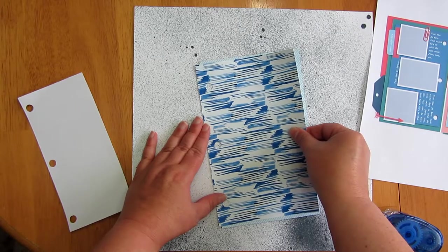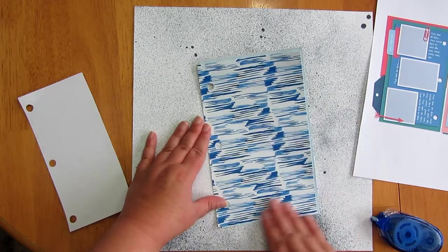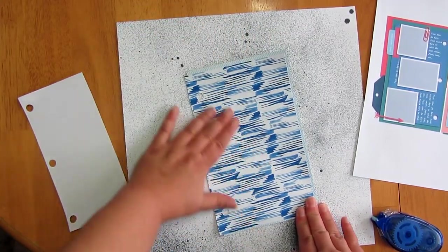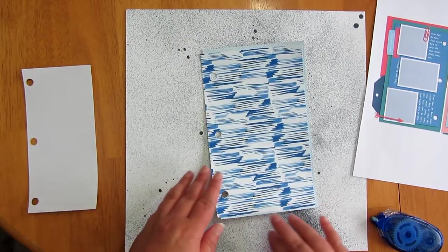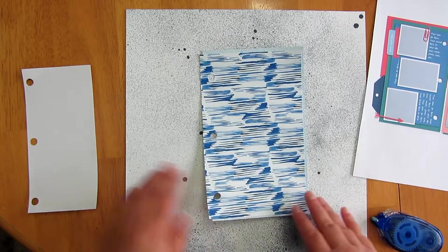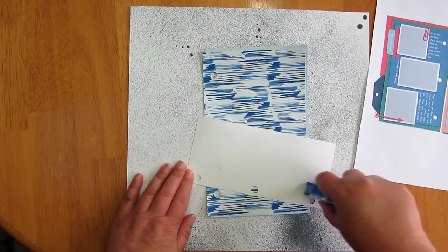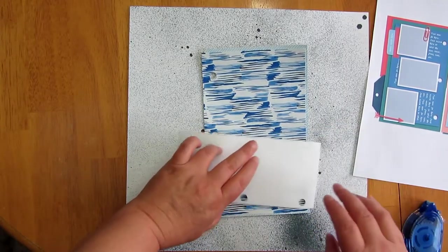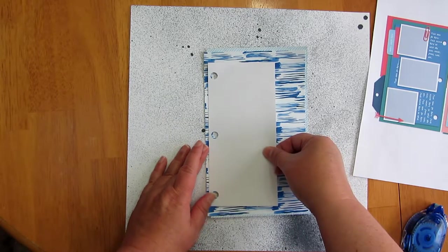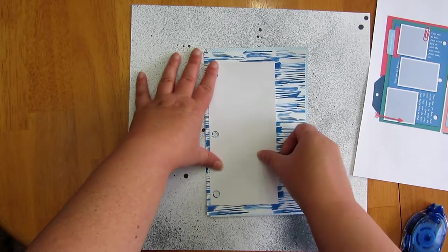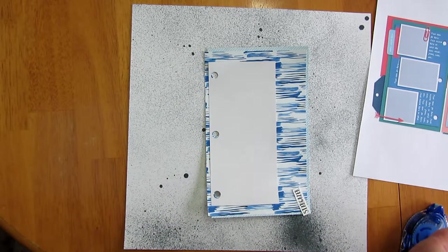These are printed out on Neenah Bright White cardstock, which I get off of Amazon. I know you can get it at office stores as well. So I'm just going to kind of messily line up. Just kind of like the thing you can kind of see where it pokes through the holes a little bit. It's a little off kilter like it is on the template.